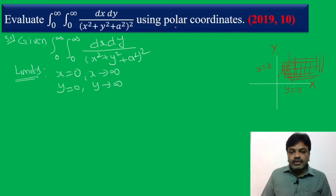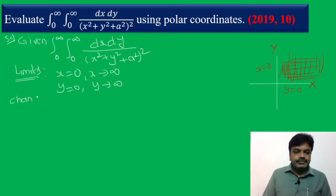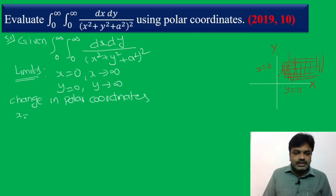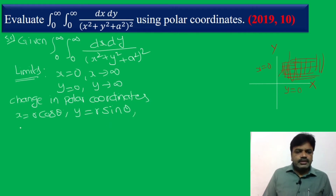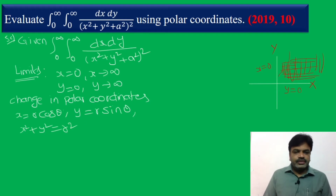The problem says to use polar coordinates, so we change into polar coordinates. The polar coordinate substitutions are: x = r cos θ and y = r sin θ. Clearly, x² + y² = r². Everybody knows that.